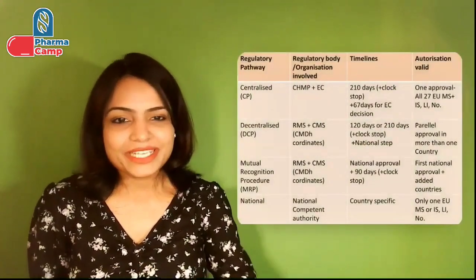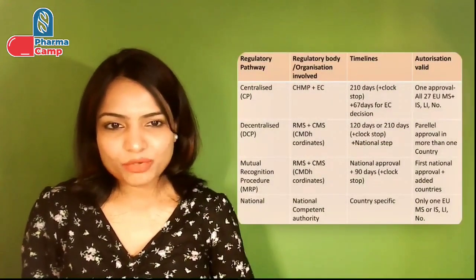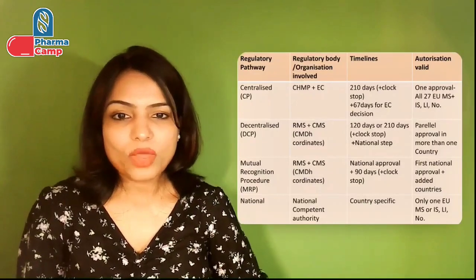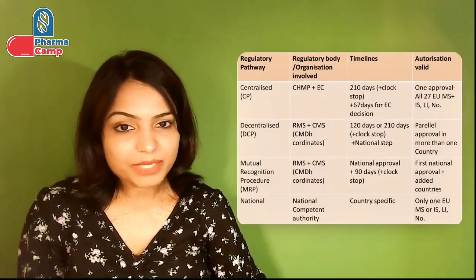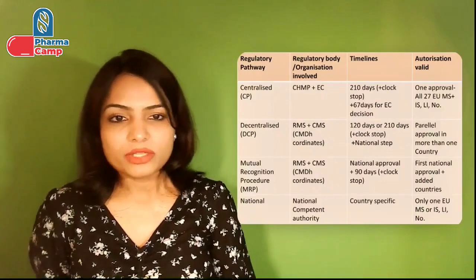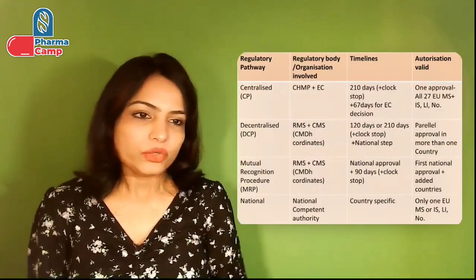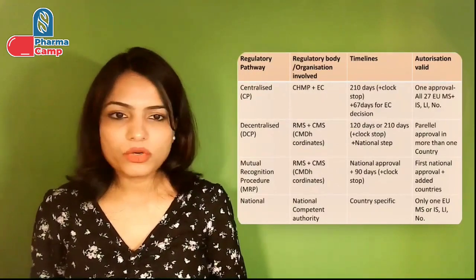The fourth category is the national pathway. If an applicant wishes to get a license in only one member state, an application must be made to the national health authority of that country, which then issues a national license. A summary figure covers all four pathway types — centralized, MRP, decentralized, and national — including who approves them, the timelines for approval, and which countries the authorization is valid in.